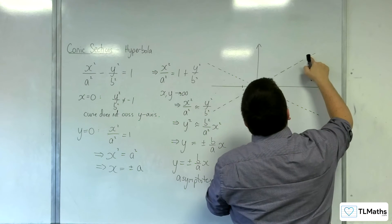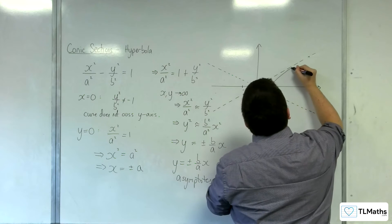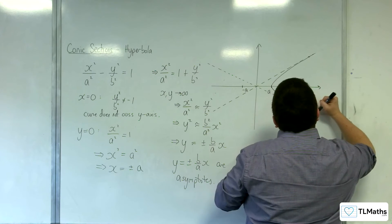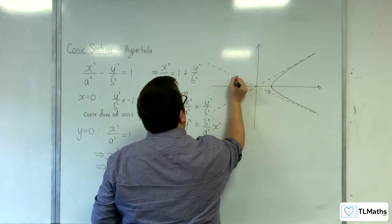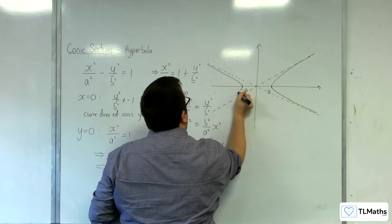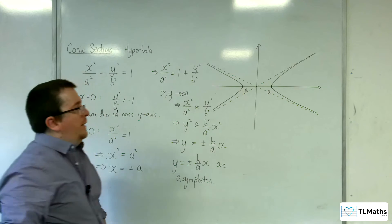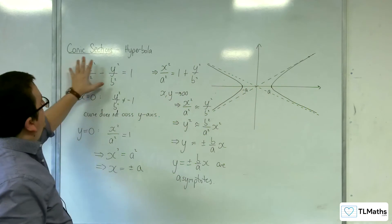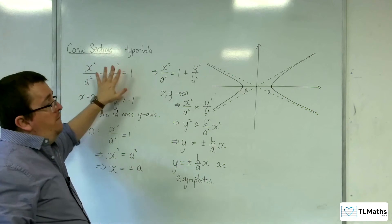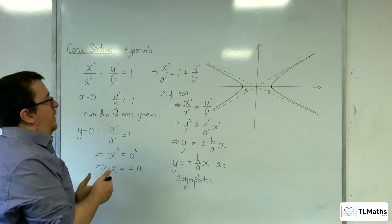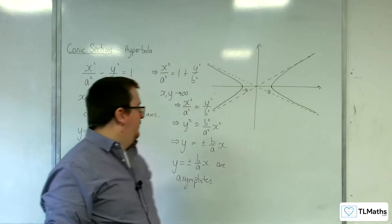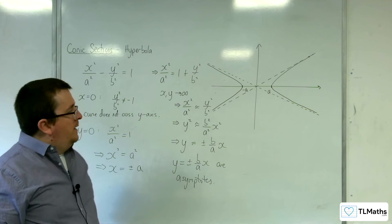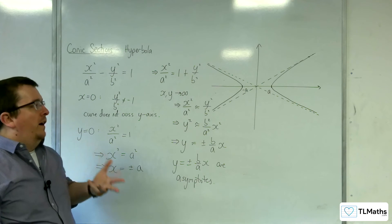And so with the curve crossing through a and minus a and tending towards those diagonal lines. Let me start from there. We must have a curve that looks something like this. And so that is what this will look like. So this is a hyperbola centered at the origin with crossing through the x-axis at minus a and positive a with asymptotes y equals plus or minus b over a x. And so this is the general form of a hyperbola.